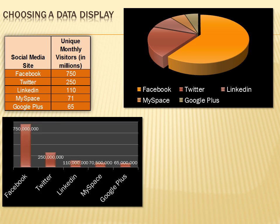How about a bar graph? That works pretty well too. I don't think it's as visually attractive, but it explains the data and gives a bit more detail than the pie chart — I know the exact numbers for each bar. That lets me see clearly that there are three times as many visitors to Facebook as to Twitter. You could also add data numbers to each pie slice to improve on the pie chart version.